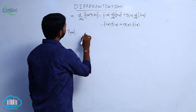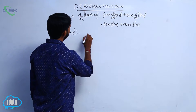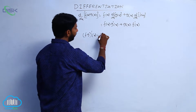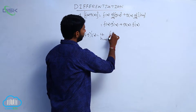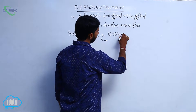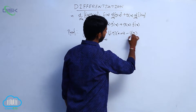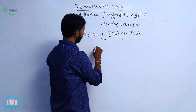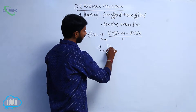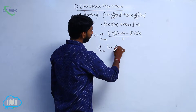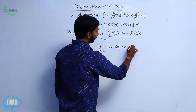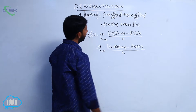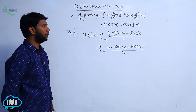Consider f g of x. By the first principle of differentiation, f g whole dash of x is equal to limit h tends to 0, f g of x plus h minus f g of x by h, which equals limit h tends to 0, f of x plus h into g of x plus h, minus f of x into g of x, all divided by h.